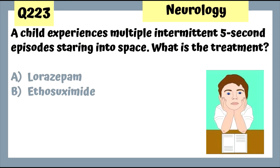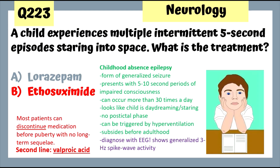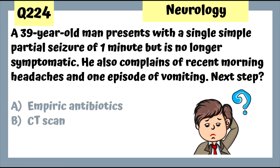Question 223: A child experiences multiple intermittent five-second episodes of staring into space. This is absence seizure — we give ethosuximide. Ethosuximide is for absence seizures; second-line treatment is valproic acid. Question 224: A 39-year-old male with a single simple partial seizure also complains of recent morning headaches and one episode of vomiting. Seizures, headaches, and vomiting are concerning for a tumor, so we need to get a CT scan.